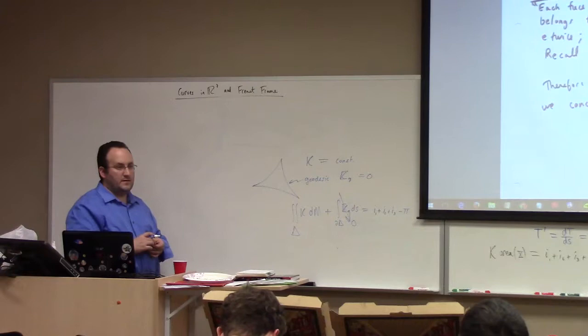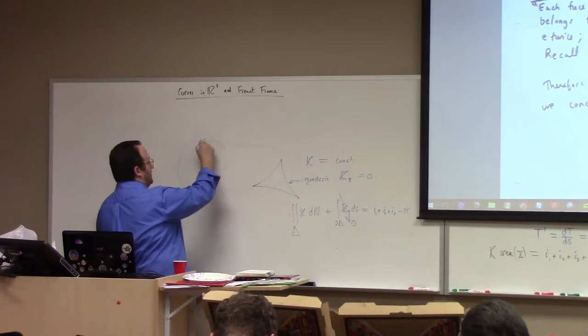Spheres are positive curvature — curvature one over r squared. If you want to form a geodesic triangle on a sphere, use great circles.